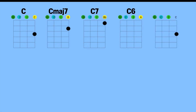And to make a C into a C augmented, we want to sharpen the fifth, which is the G note, and we'll make it a G sharp. I'd play this shape by reaching over with my index finger.